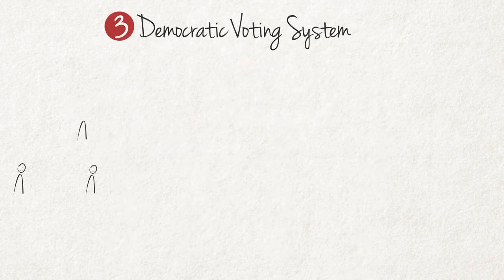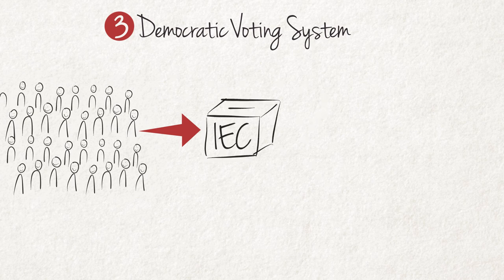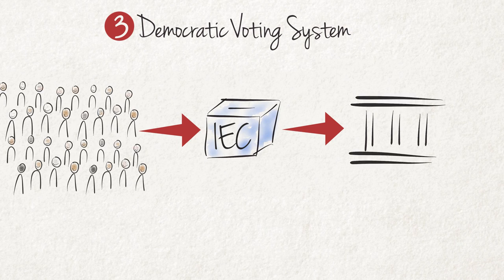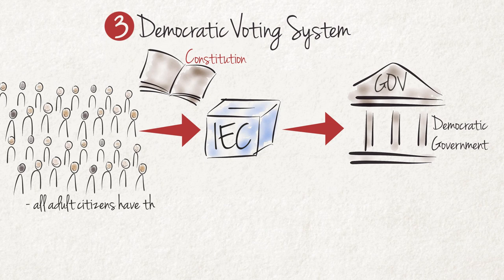The third key feature is a democratic voting system. In a representative democracy, we elect representatives to pass legislation and govern the country, instead of having one person making all the decisions. This happens through regular elections in line with the country's constitution. Democratic voting systems are characterized by the following: 1. There is universal suffrage, which means that all adult citizens have an equal right to vote in a country's elections.